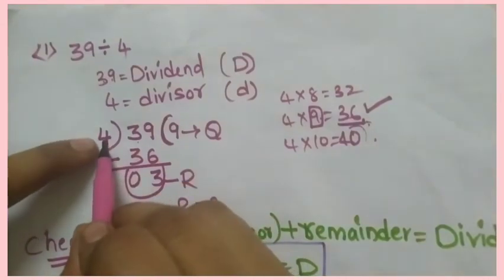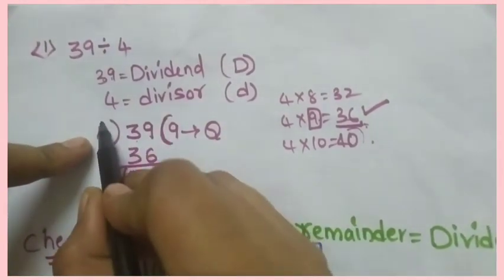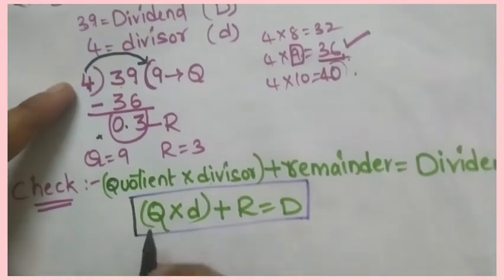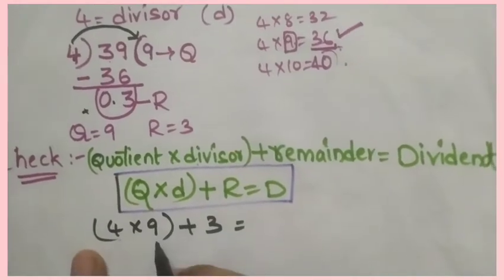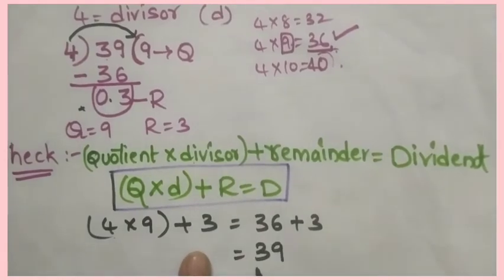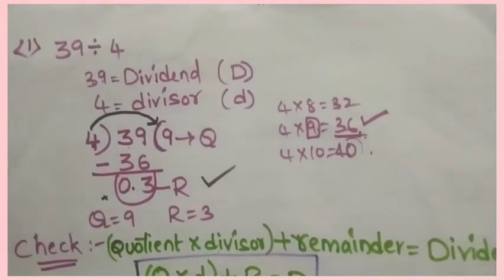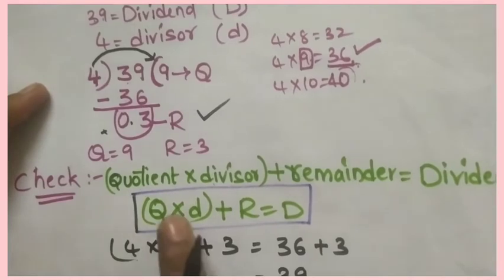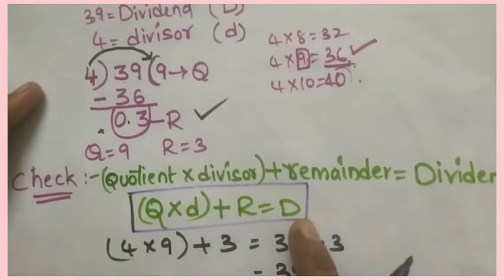Here, 4 is the divisor and 9 is the quotient. Multiply these two and add the remainder. 4 into 9 plus 3: 4 nines are 36, plus 3 equals 39. We got the dividend! So the answer is correct. This formula — quotient into divisor plus remainder equals dividend — confirms the division is correct.